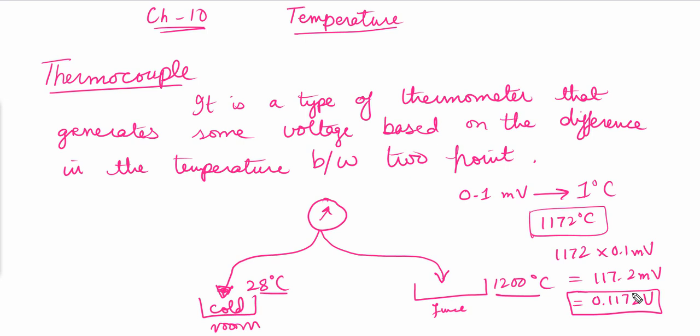The sensitivity of a thermocouple depends on the scale factor — the voltage generated per degree Celsius. If we take more voltage per degree, sensitivity increases; if less, it decreases. Usually, because thermocouples are used to measure very high temperatures where a change of one or five degrees Celsius doesn't make much difference, the sensitivity of a thermocouple is generally lower.